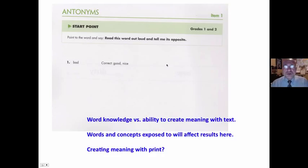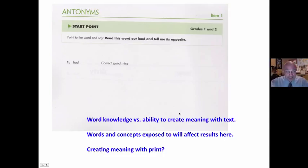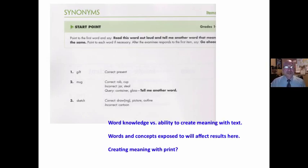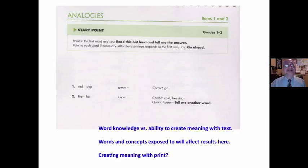The brain is a meaning-making organism. 'Read this word out loud and tell me its opposite: Bad.' It's word knowledge instead of students' ability to create meaning with print. The brain's ability to look at something and create meaning with it. The words and concepts students have been exposed to will affect their results here. Does this reflect creating meaning with print? Synonyms — same thing. Word knowledge versus the ability to create meaning with print.